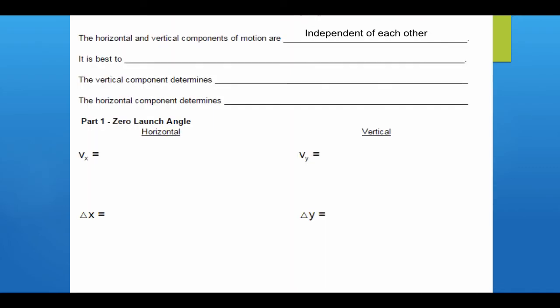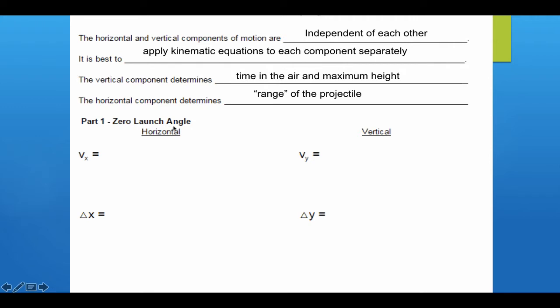Since the horizontal and vertical components are independent, it's best to apply kinematic equations to each component separately. The vertical component determines time in the air and maximum height, while the horizontal component determines the range, or how far the projectile goes before hitting the ground. The easiest type of projectile problem is when there's zero launch angle, or when projectiles are launched completely horizontally. This is easier because we don't need to break down the initial velocity into components.